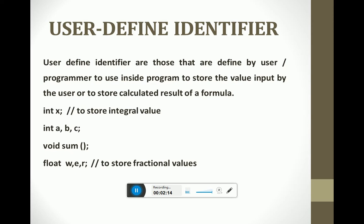Examples of user-defined identifiers: int x — x is a user-defined identifier; int a, b, c — these are three variables belonging to the integer family; void sum — this is the declaration of a function; float w, e, r — these are variables belonging to floating point values, used to store values input by the user or calculated results of a formula.